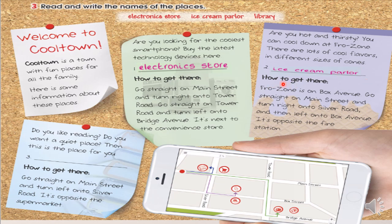How to get there. ¿Cómo llegamos allí? Frost Zone está en la avenida Box. Vamos de frente sobre la avenida principal. Doblamos a la derecha sobre la carretera Silver. Y luego a la izquierda sobre la avenida Box. Está al frente, opuesto a la estación de bomberos.